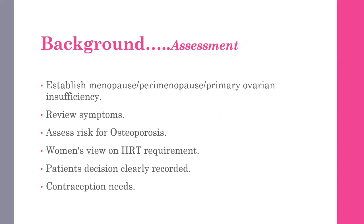When you have an overview of why the lady has come to you, you need to do a certain assessment. First, establish whether it is menopause, perimenopause, primary ovarian insufficiency, or otherwise. What is the age, the duration of the period, and the menarche? Review the symptoms — why has the patient come? Does she have hot flushes, infertility, irregular periods? Assess for risk factors including risk of osteoporosis.